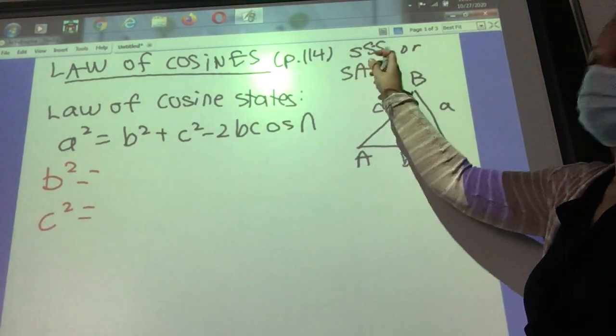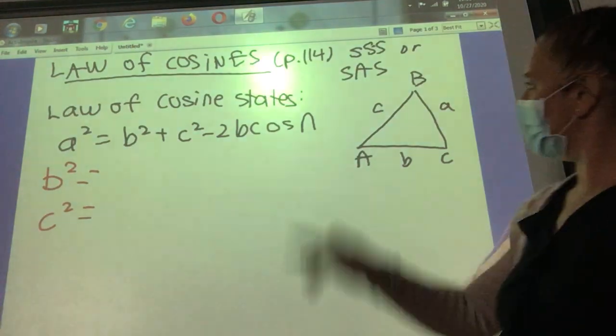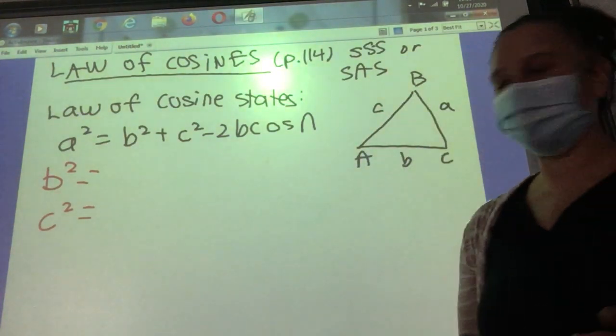The cosines you're using when it's side, side, side. So if they give you all three sides and no angle, you'd have to use law of cosines. And side, angle, side when you've got the angle included.